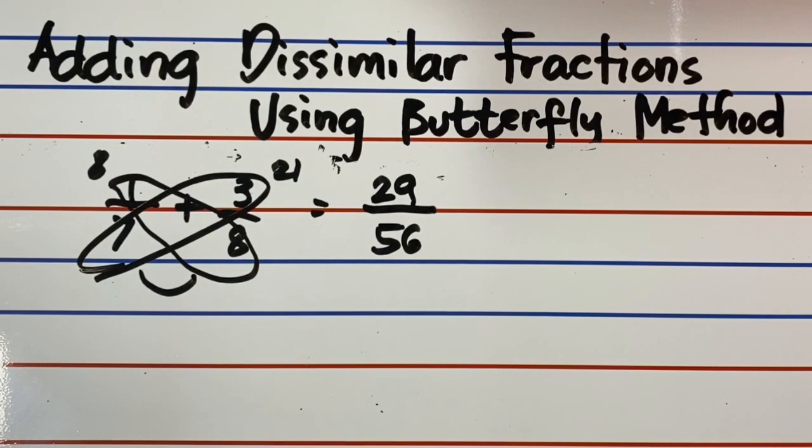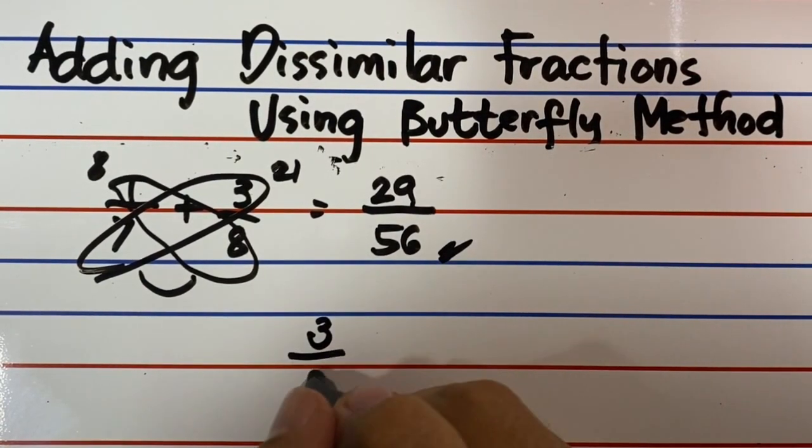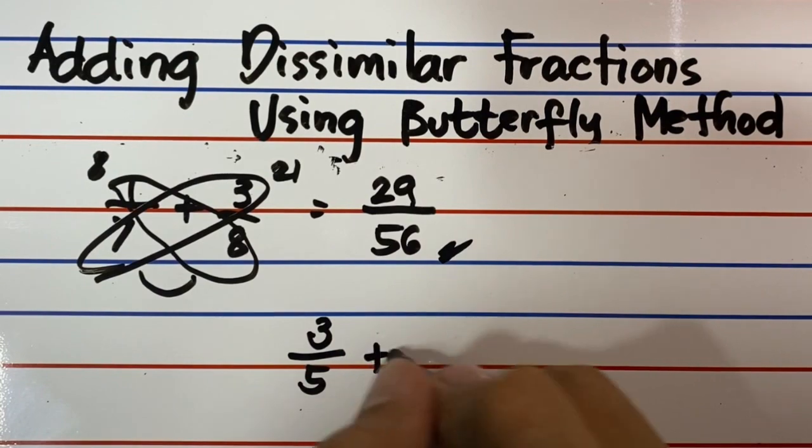Is this a proper fraction? Yes. As you observe, the fraction is already in the lowest term since 29 is already a prime number. That is, it has only two factors. One and the number itself. Watch and learn the next example.